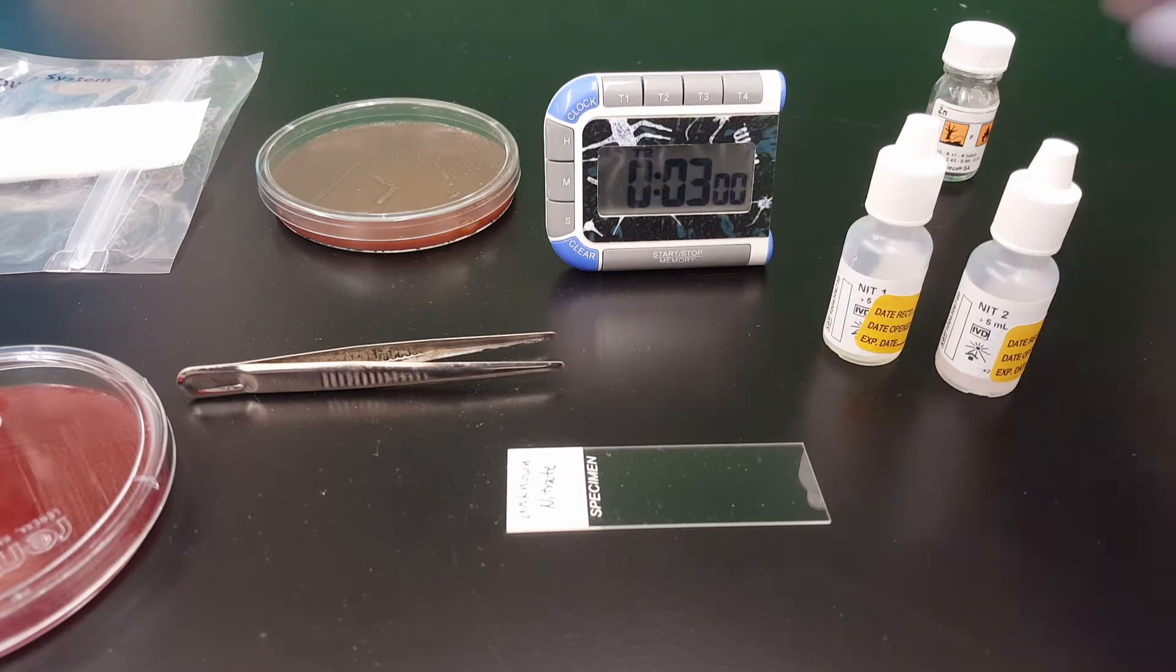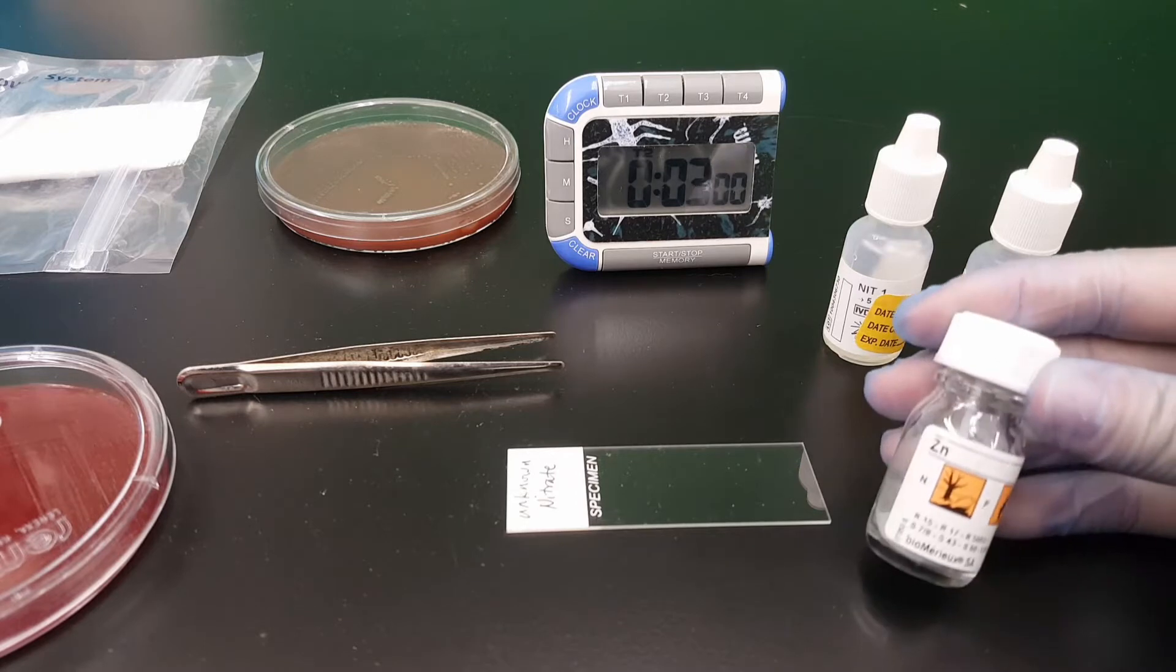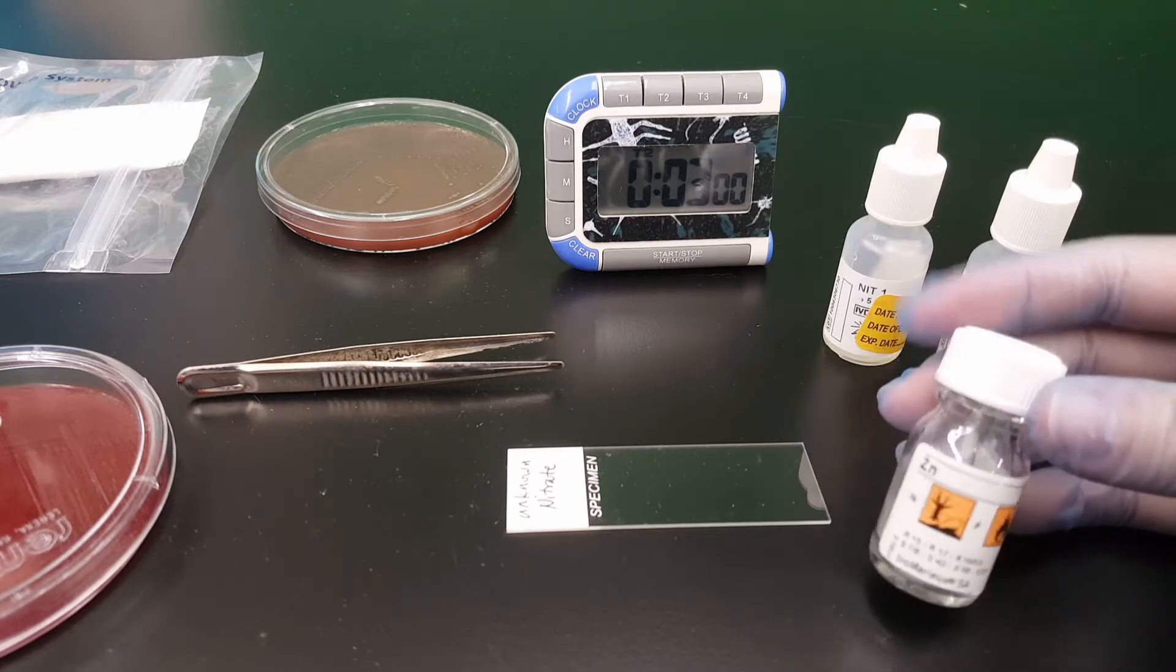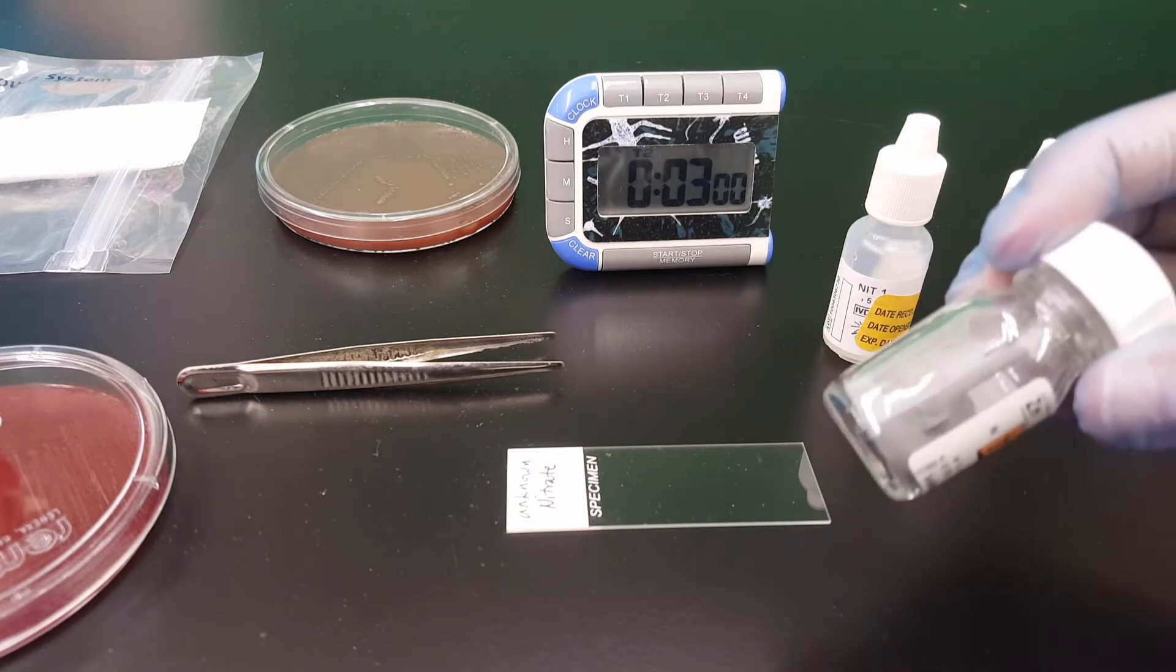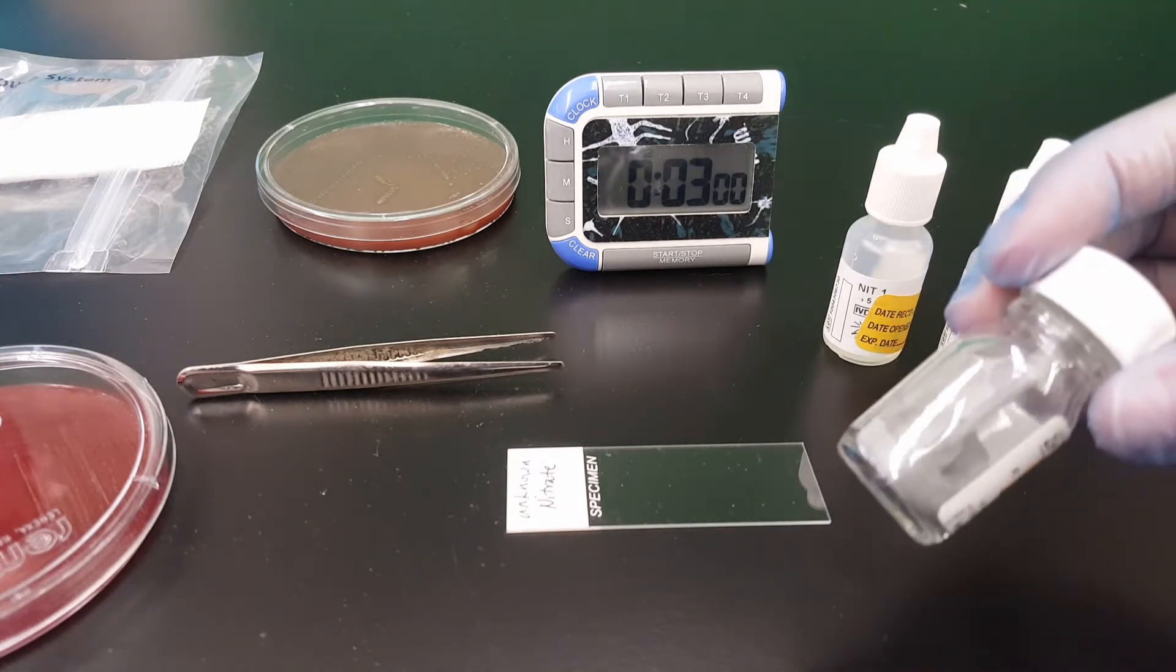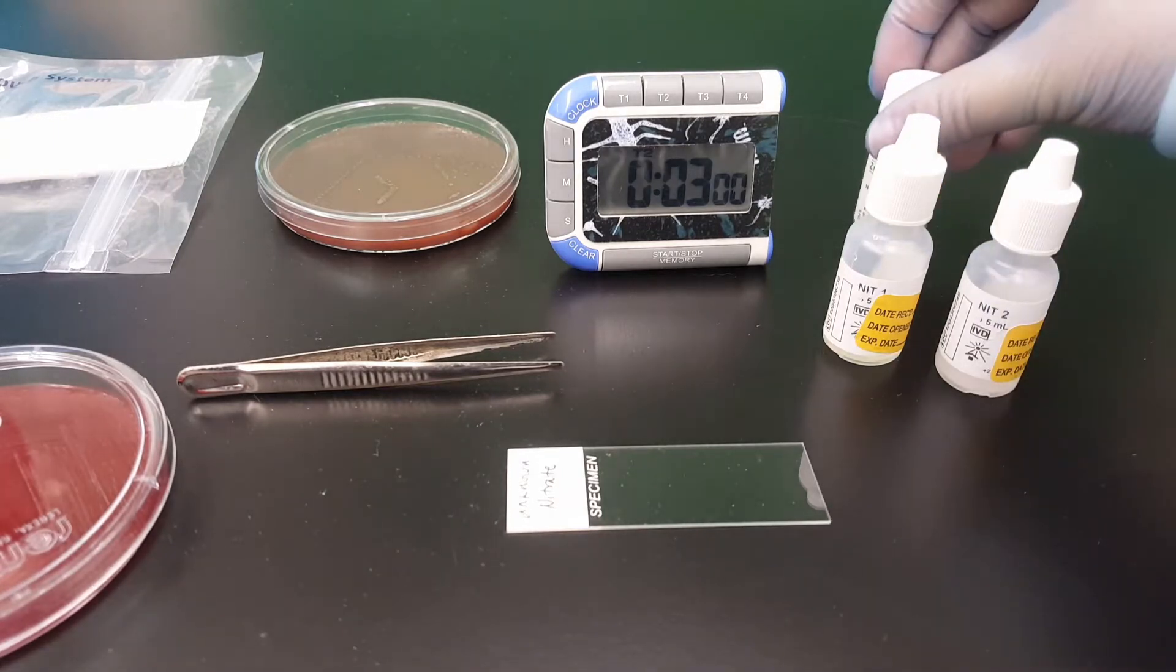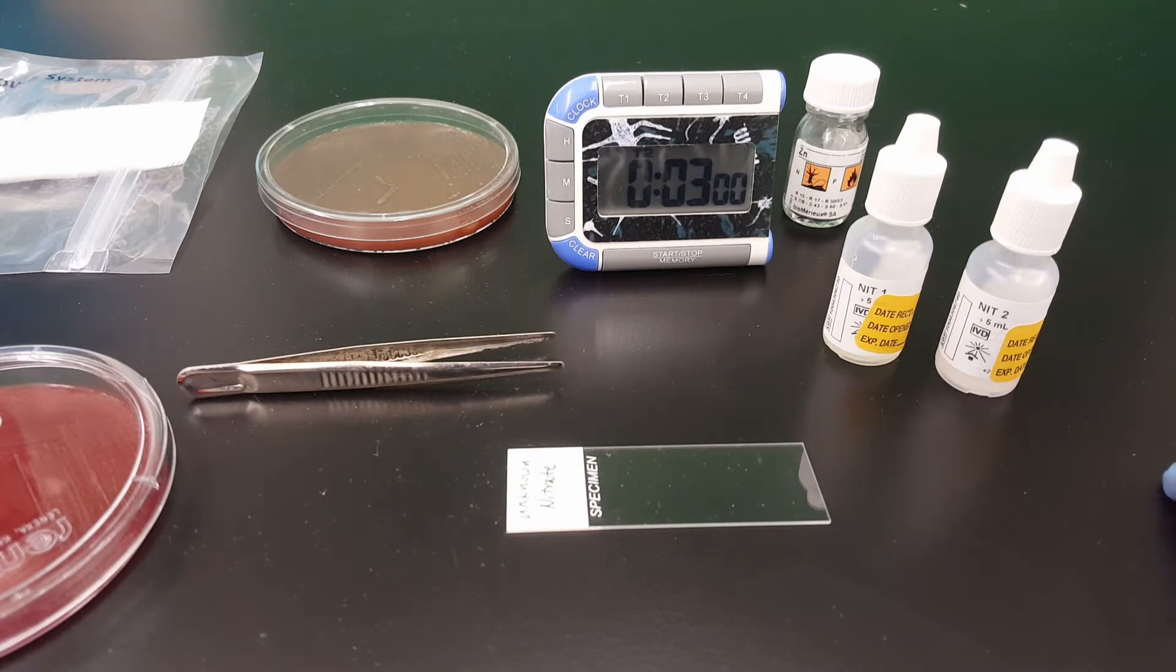And so what we then do is we go and add a little bit of zinc dust by using, there's a little bit of a scooper in there. We just add a little bit on top of there and look for a color change there. So if there was no color change at the beginning and we add the zinc dust and it turns red, that's still indicative of a negative result.